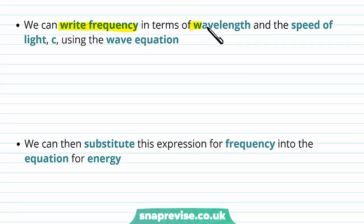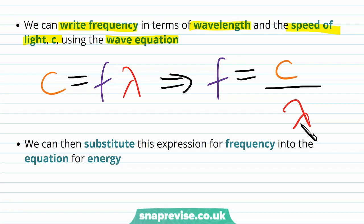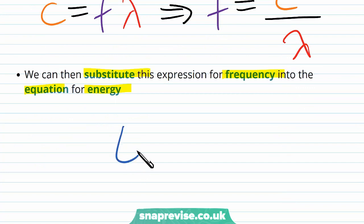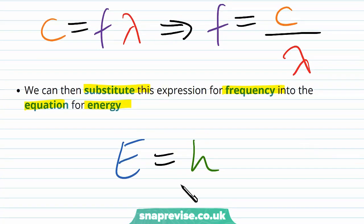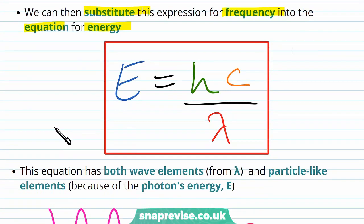We can write frequency in terms of wavelength and the speed of light c using the wave equation: c = fλ, so f = c/λ. Substituting this expression for frequency into E = hf gives us a second equation for the energy of a photon: E = hc/λ.